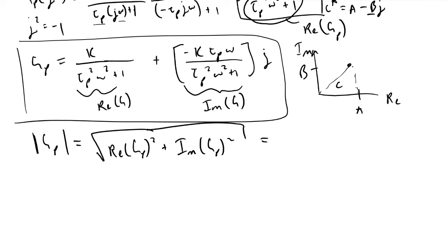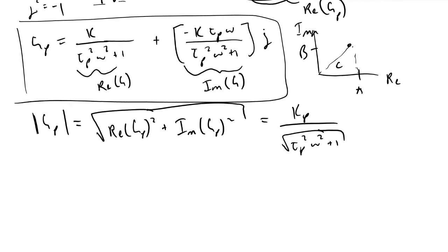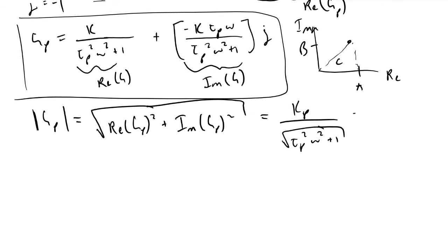If you work through the math, what you will find is that this is equivalent to kp divided by square root tau p squared omega squared plus one. In addition to that, this is equivalent to your amplitude ratio. We'll get to what's cool about that in a minute.